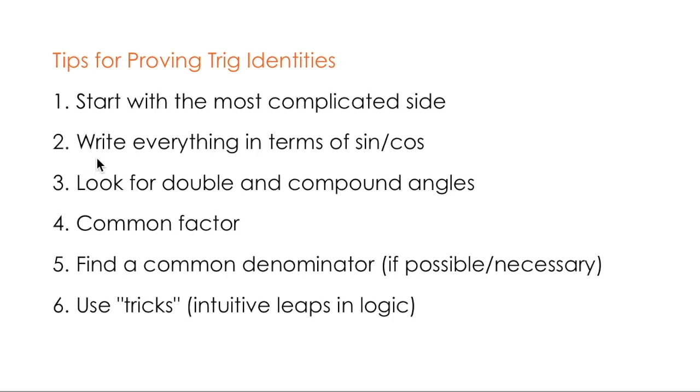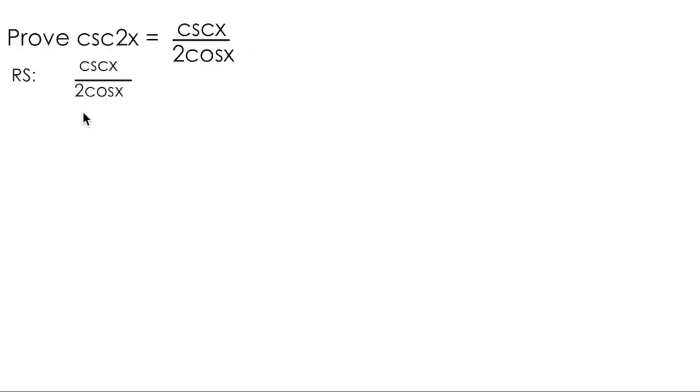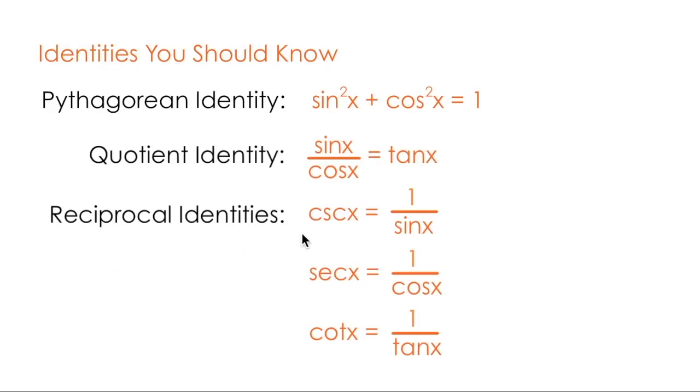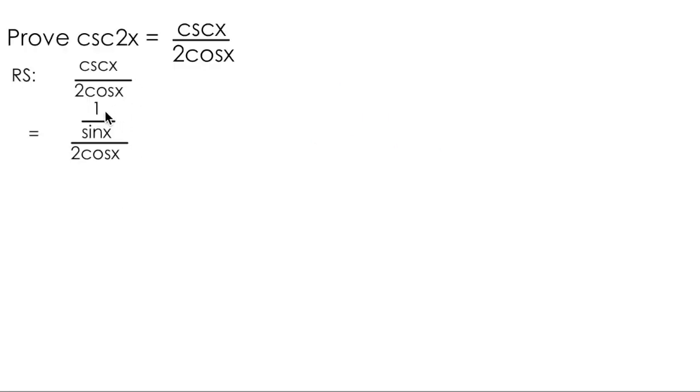My list of tips says write everything in terms of sine and cos. Looking at my right side, I have a reciprocal expression of cosecant on top. Remember, using the reciprocal identity cosecant is equal to 1 over sine, I can rewrite this expression as 1 over sine over 2 cosx. Using my understanding of fractions, I know that 1 over sine divided by 2 cosx is the same thing as taking 1 over sine x and multiplying by 1 over 2 cosx.